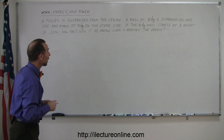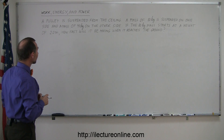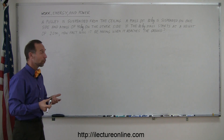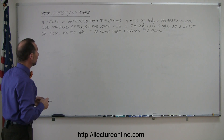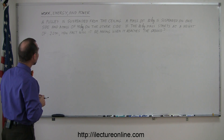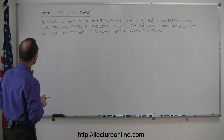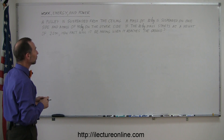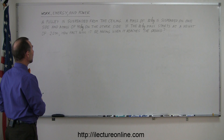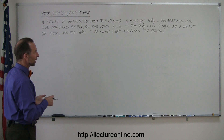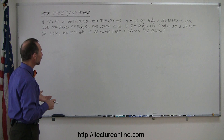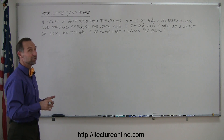Here's another example of how we're going to use that handy equation to solve a problem. It involves work, energy, and power — power is something we'll cover later, so this is mostly work and energy. The problem says a pulley is suspended from the ceiling, a mass of 80 kilograms is suspended on one side, and a mass of 40 kilograms on the other side. If the 80 kilogram mass starts at a height of 2 meters, how fast will it be moving when it reaches the ground?